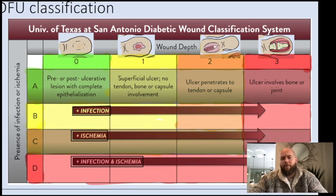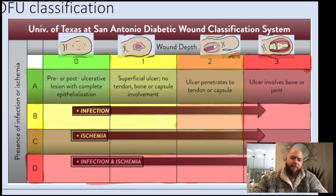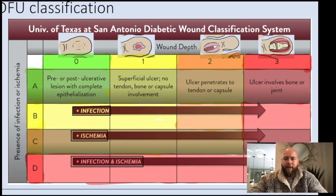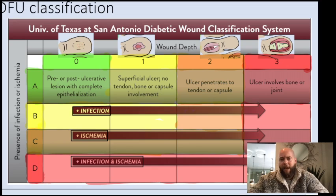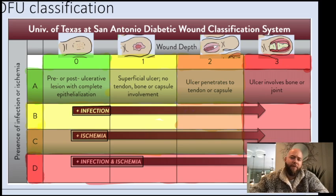To remember that infection comes before ischemia: alphabetically, N comes before S. So A is nothing, B is infection, C is ischemia, and D is both infection and ischemia — the worst case scenario. You use zero through three to describe the anatomic depth, and A through D to describe if there's infection, ischemia, both, or neither. And it's as simple as that.